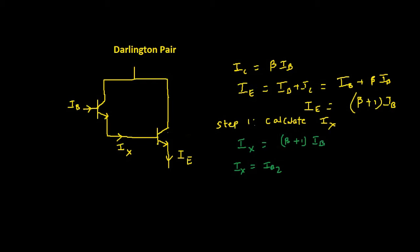it will also have same beta as the first transistor. So IE will be beta plus 1 times IX. On further simplification, this is beta plus 1 and IX is beta plus 1 times IB. So in total, the emitter current of the second transistor will be,